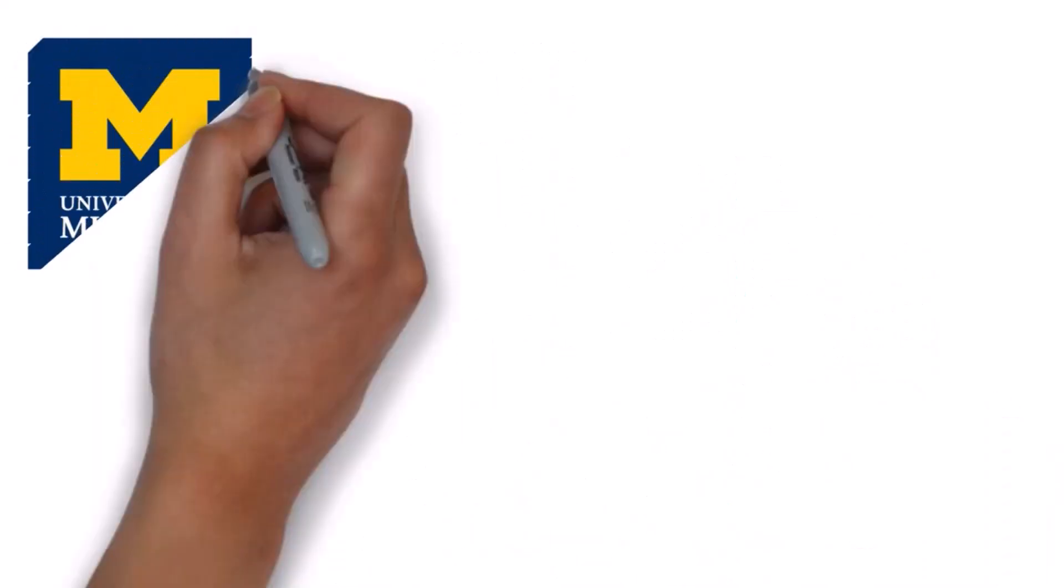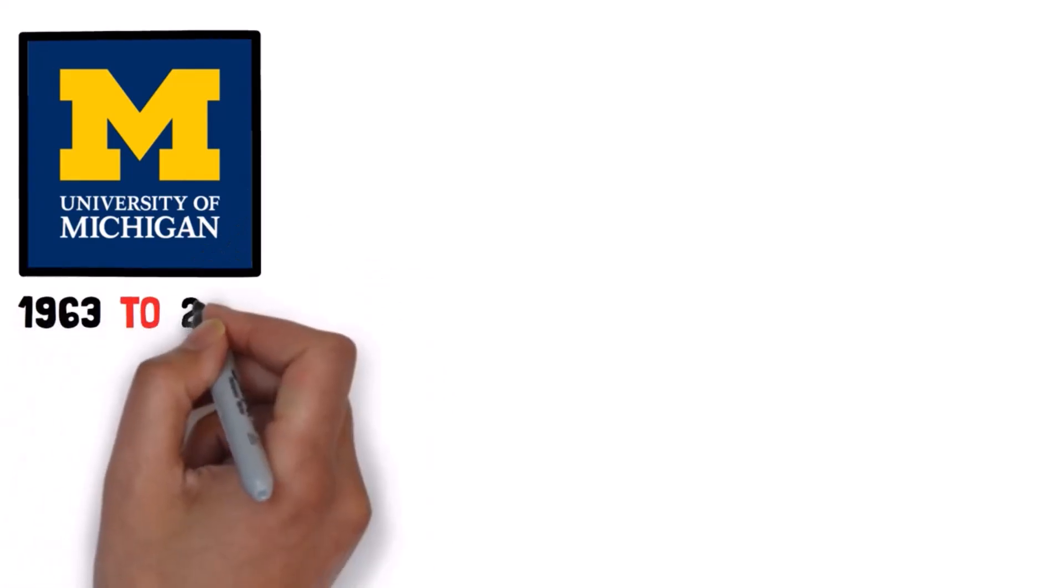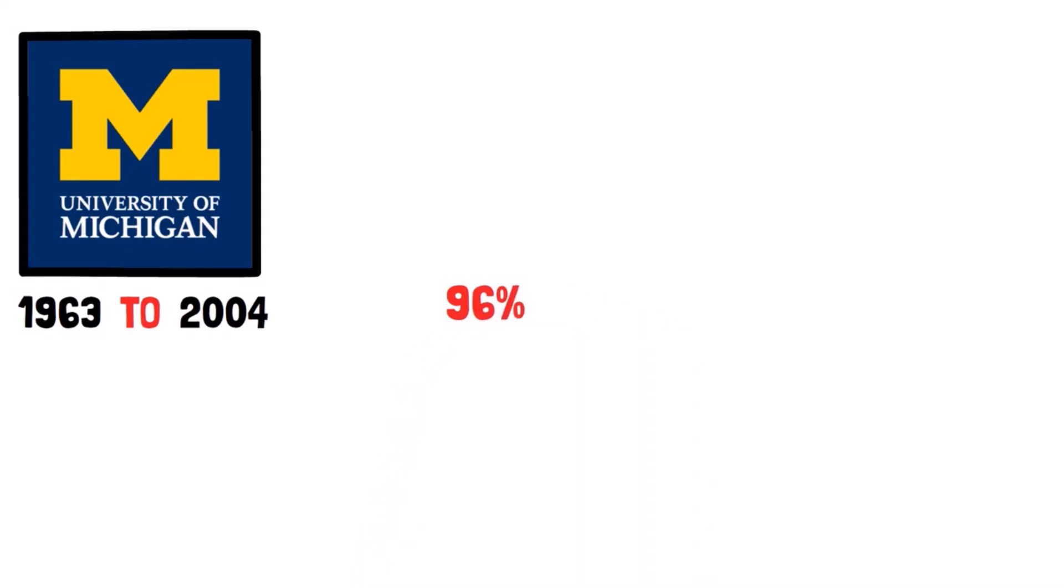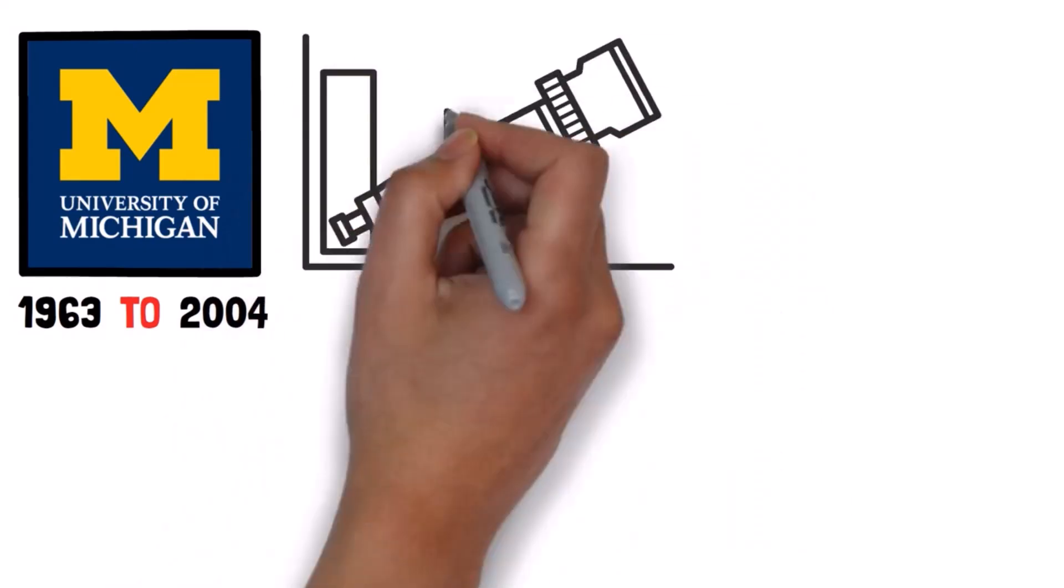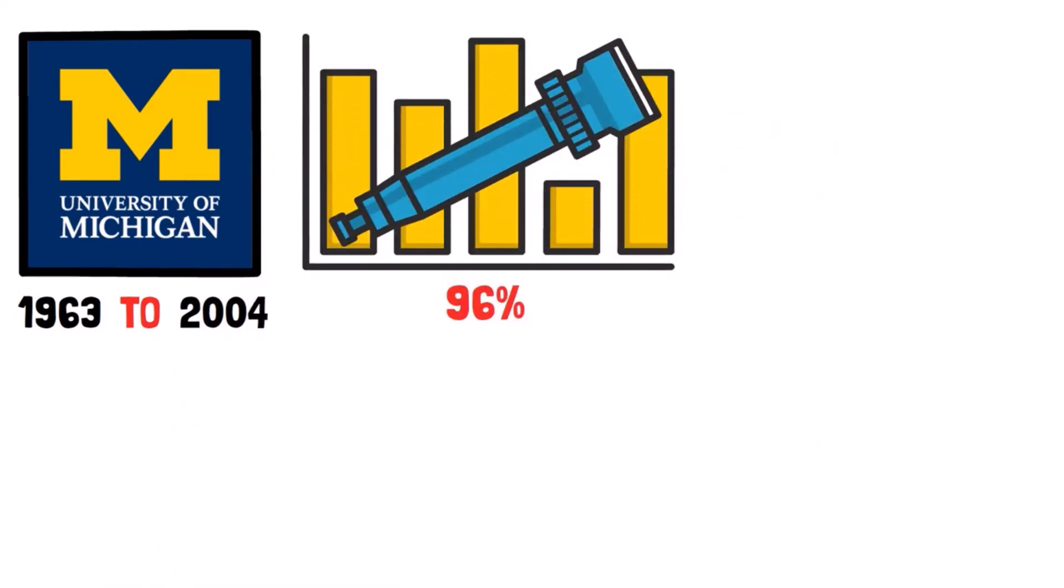Unless you have a magic lamp, there's no way to predict the future. A study conducted at the University of Michigan measured returns from 1963 to 2004 and found that 96% of positive returns during that period came from just 0.85% of trading days.